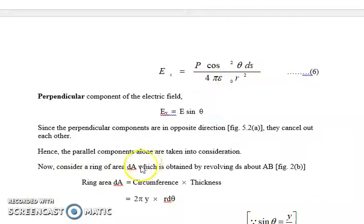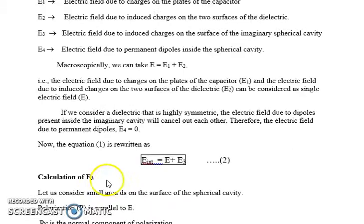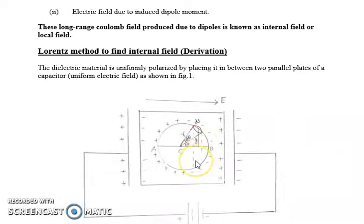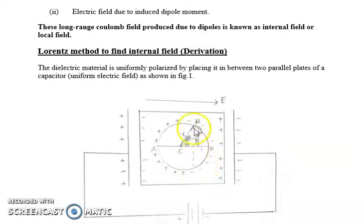Now we are going to consider a ring area dA. In this diagram, consider the dotted line — I am going to treat this as a ring. This ring area dA is obtained by revolving dS about AB. If you revolve dS about AB, we get this ring area dA.